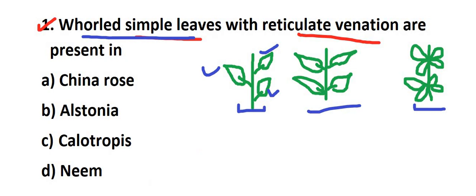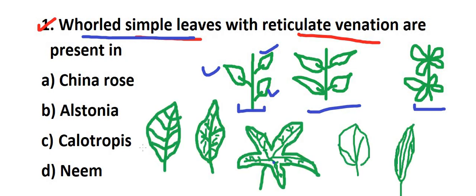Now, these leaves should have reticulate venation. There are five types of venation. First is pinnate venation, where veins are arranged like a line along the midrib. Reticulate venation is a net-like pattern where inner veins branch into smaller veins going in different directions.